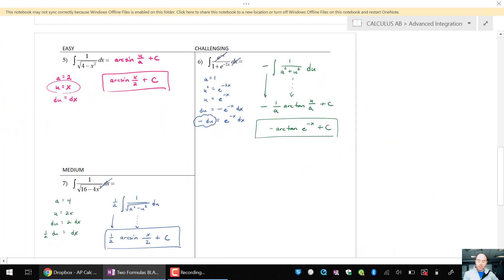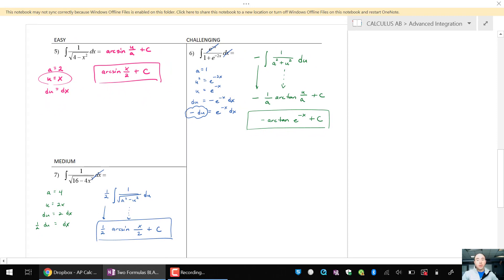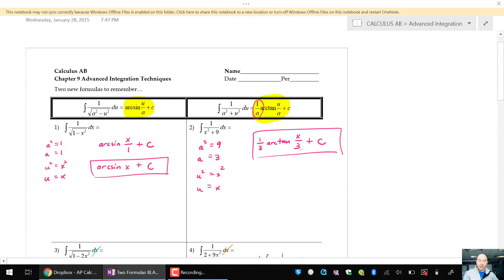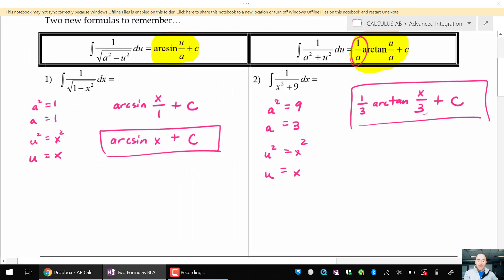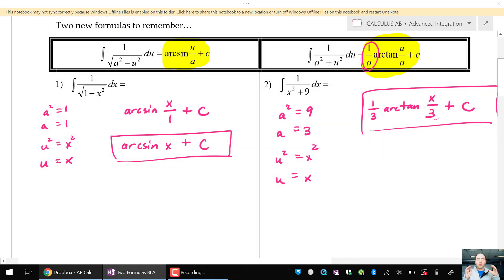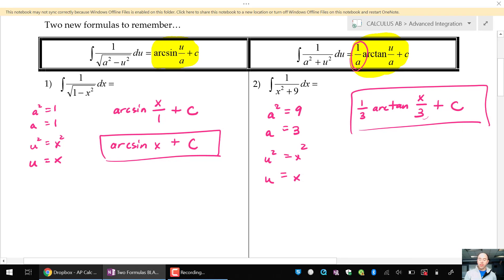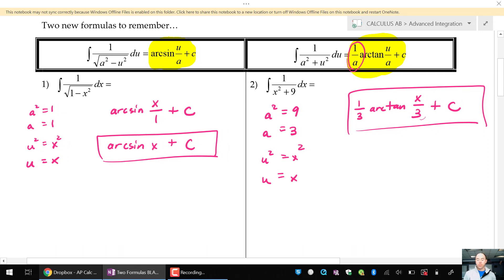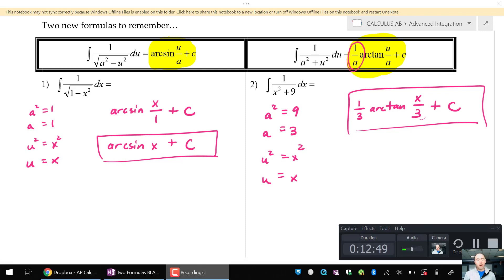Easy, medium, and challenging one to end with. So those are the two formulas that we're going to use in this unit on advanced integration. Two formulas to remember. The antiderivative of this 1 over square root of a squared minus u squared. That will be the arcsine antiderivative along with the 1 over a squared plus u squared in the integral. Look for the ones in the numerator and look for the denominators to match that pattern, that formula. And then your antiderivative will be arcsine or arctangent. And watch for those nuances involving u substitution. So that will get you started with advanced integration. Hope this video was helpful. And as always, thanks so much for watching.